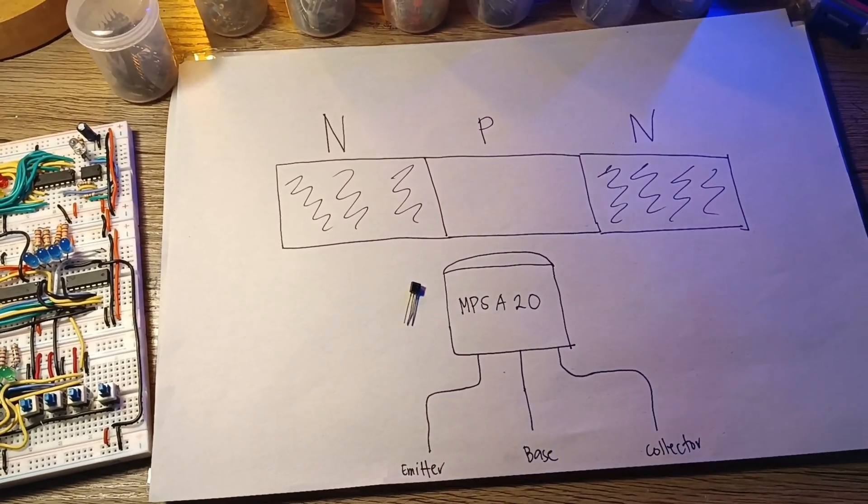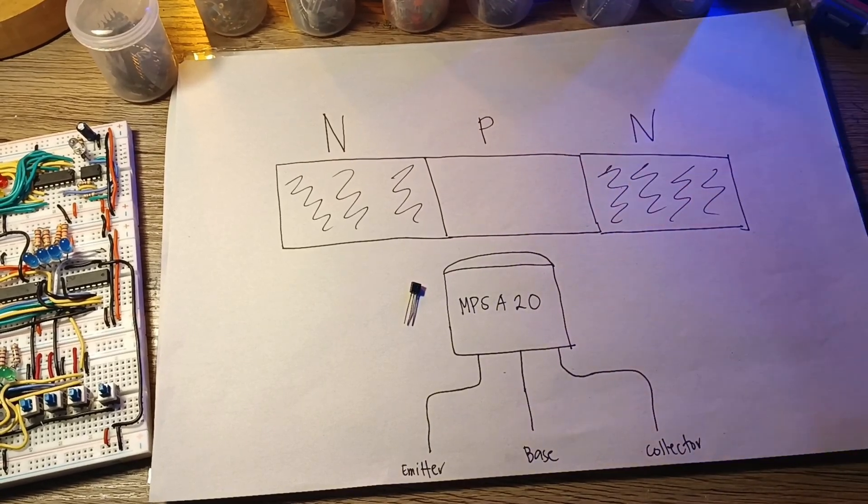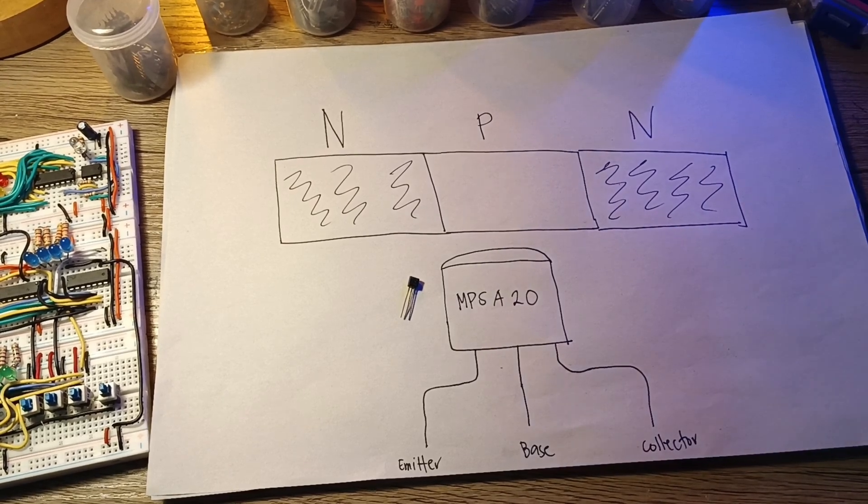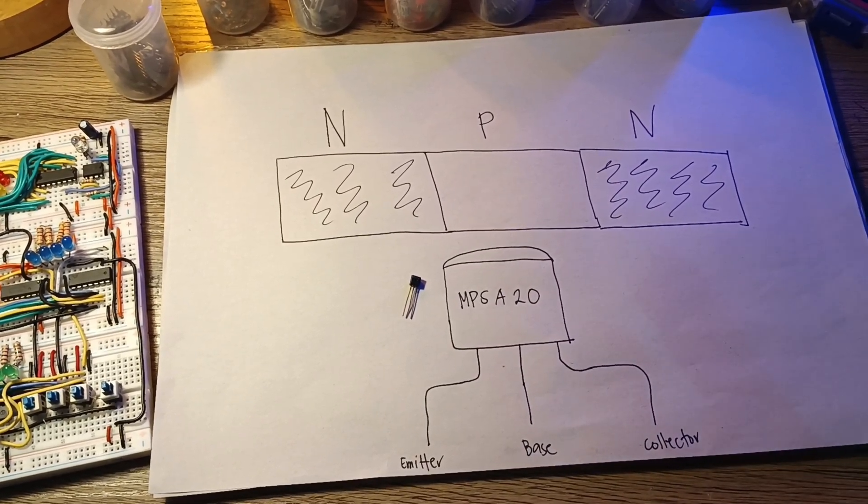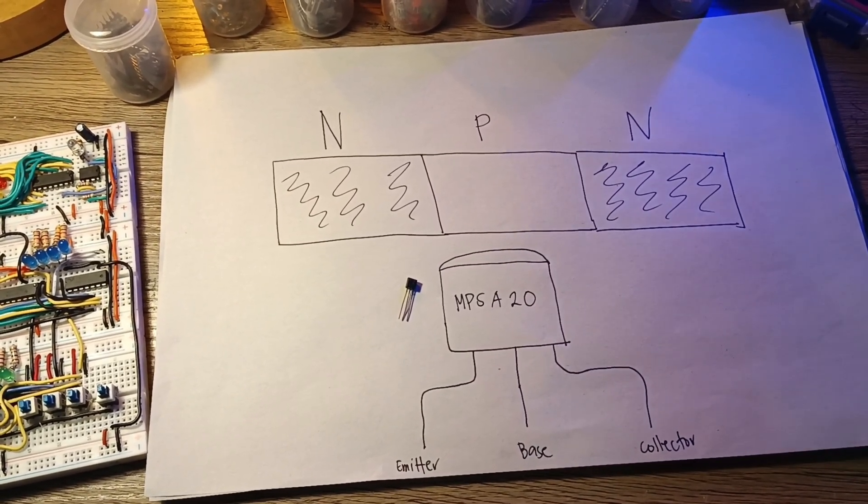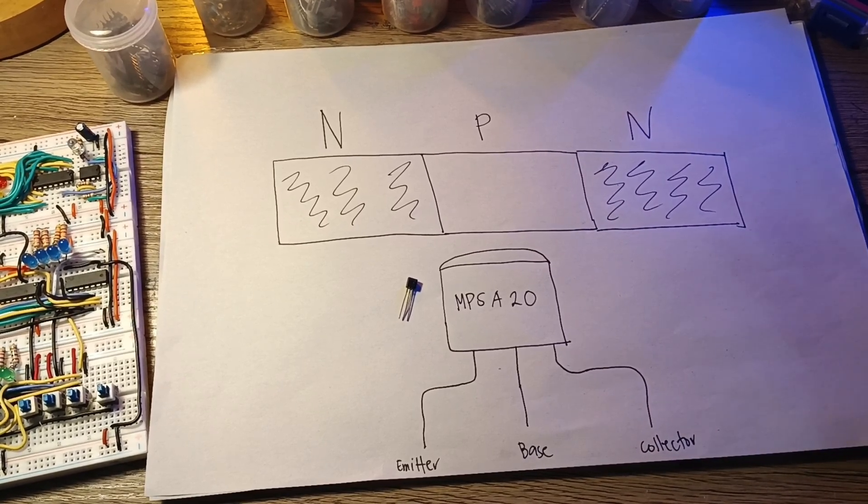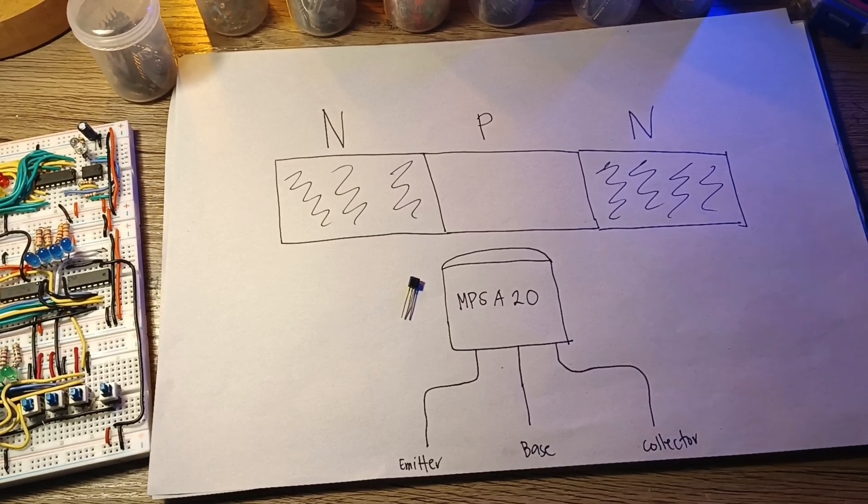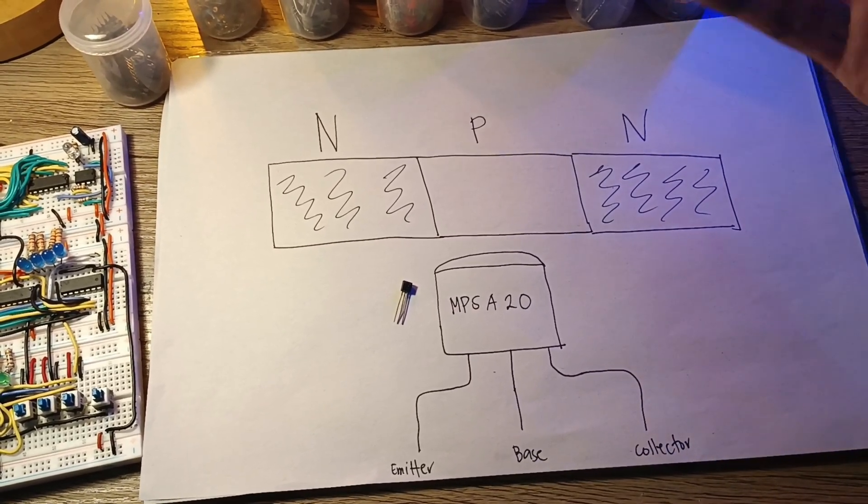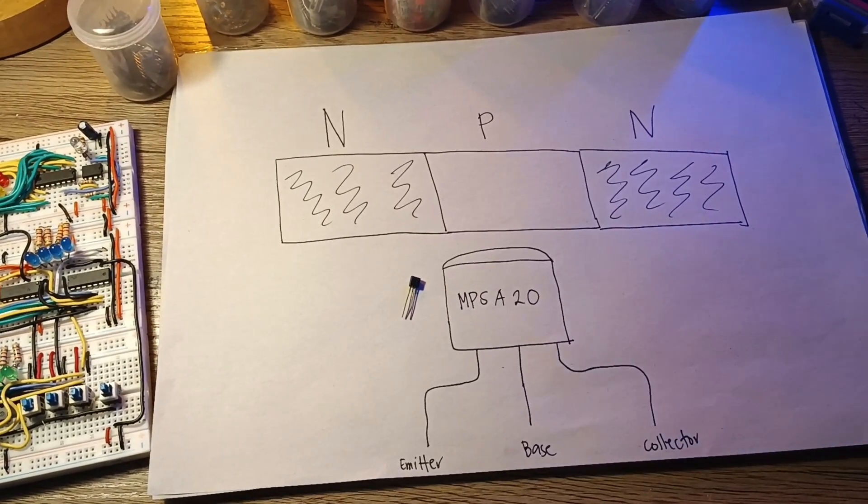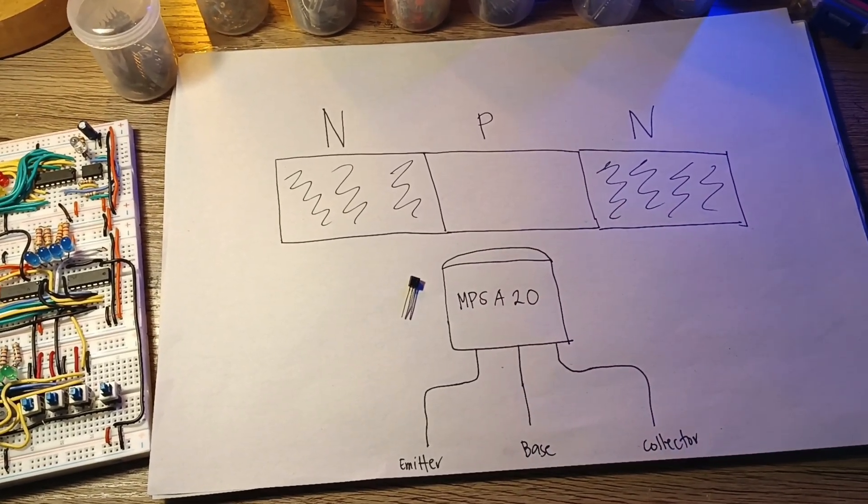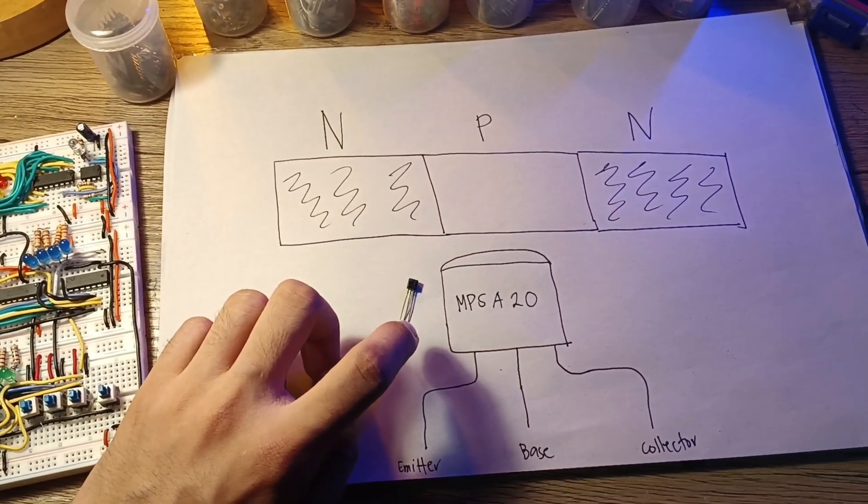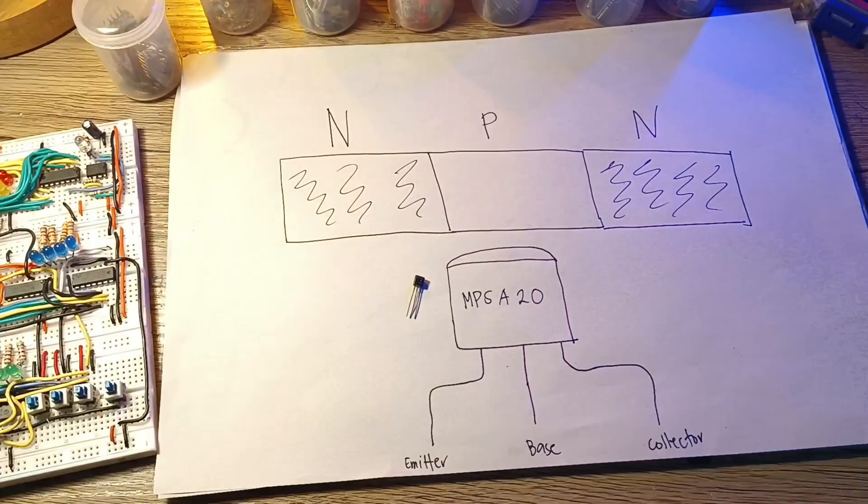The MPSA-20 is a general purpose NPN bipolar junction transistor that can be used in various electronic circuits including digital logic gates. When configured as a NOT gate, the transistor is used to invert the input signal.